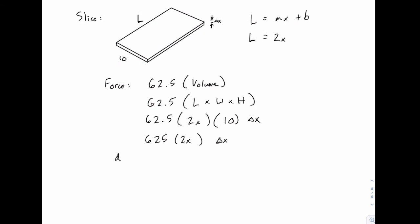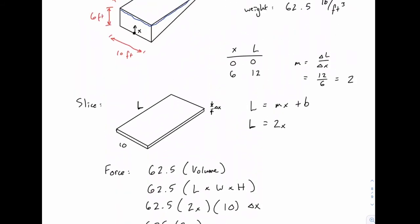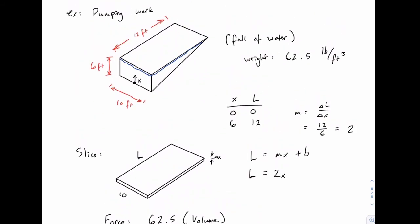Then for the distance, we can go back to the picture. And just like we did before, if x starts at the bottom and we're measuring upward, the total distance we're trying to lift it is 6 feet. So if we've gone x feet up and cut a slice, the total distance up to the top must be 6 minus x.